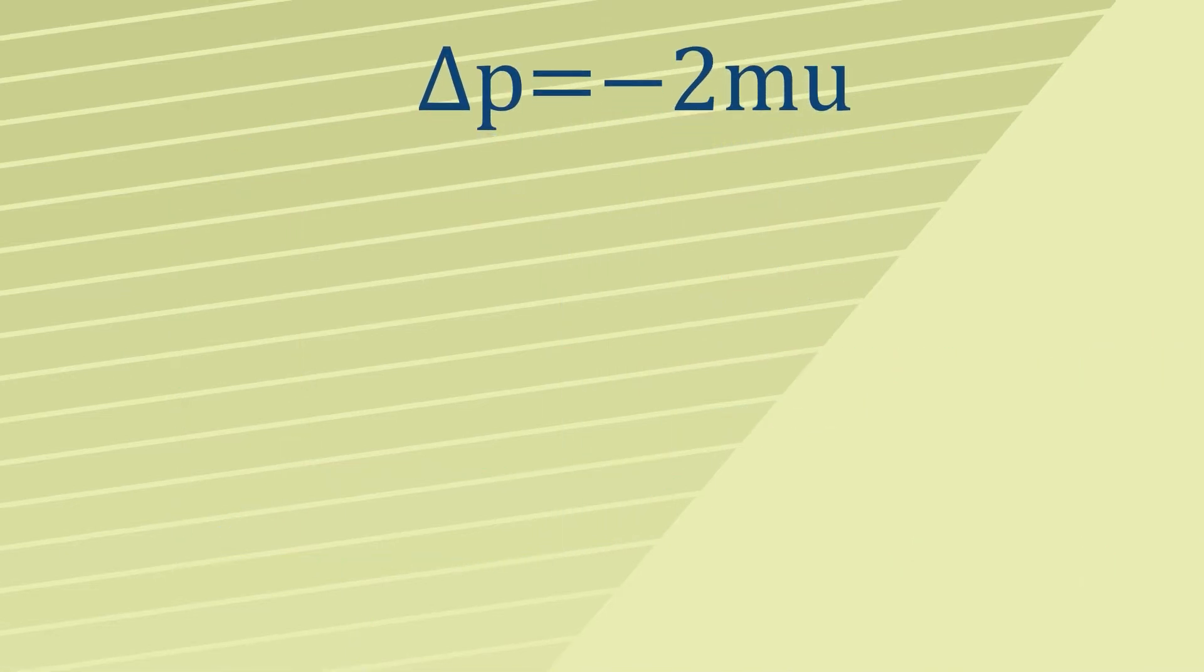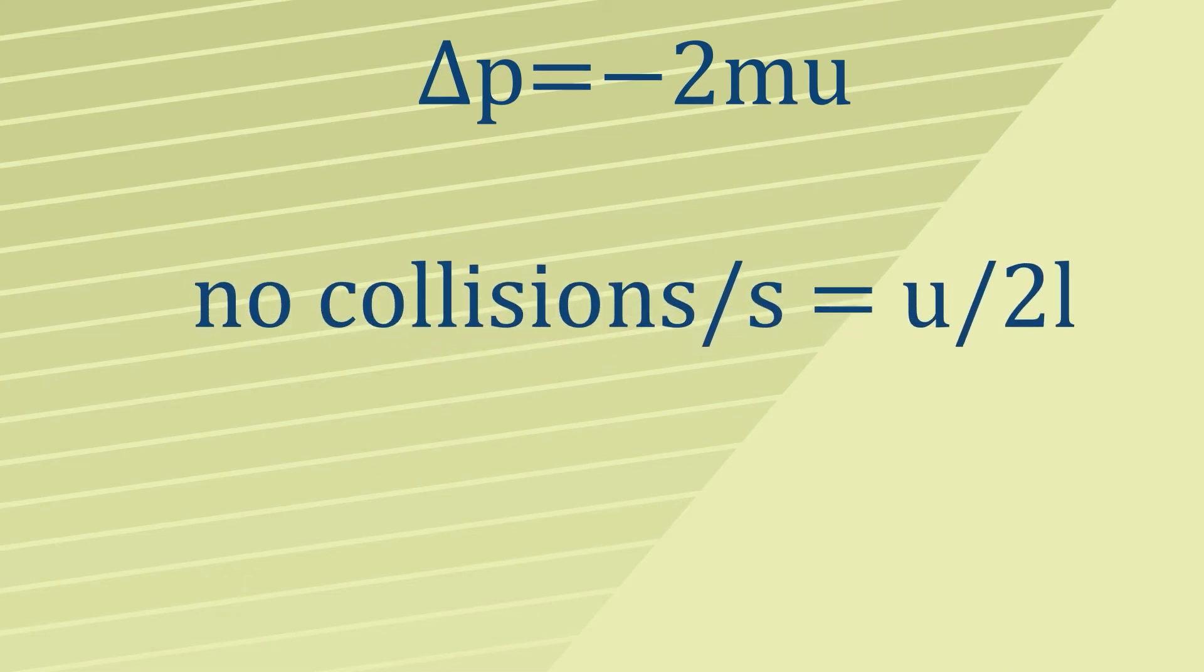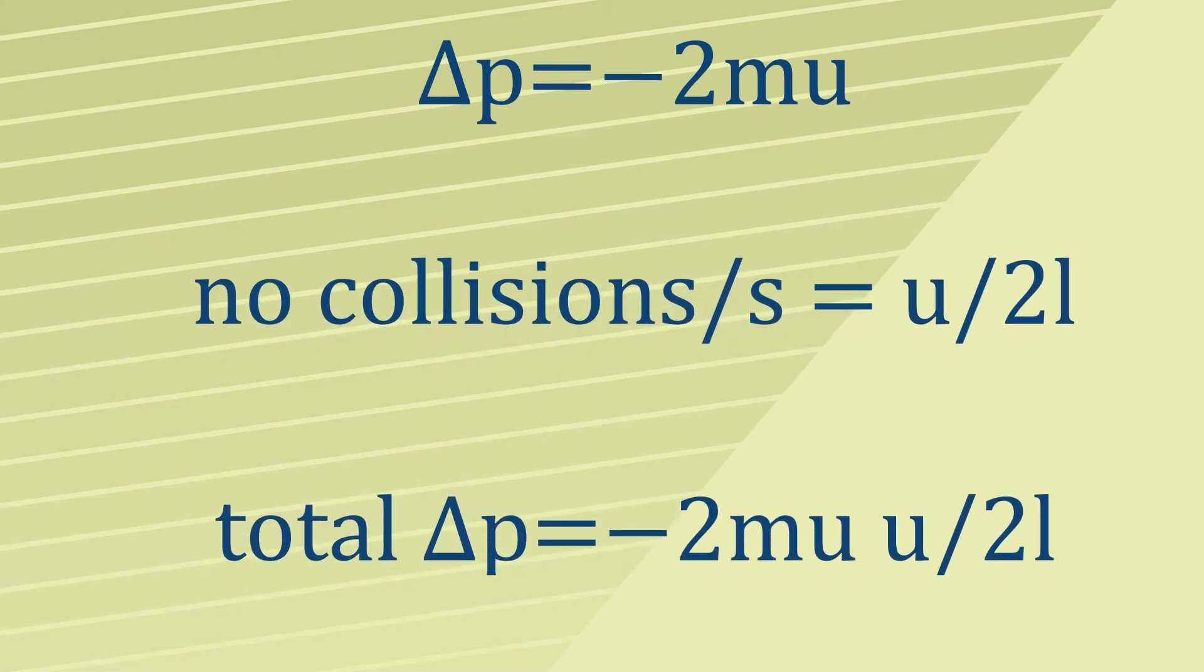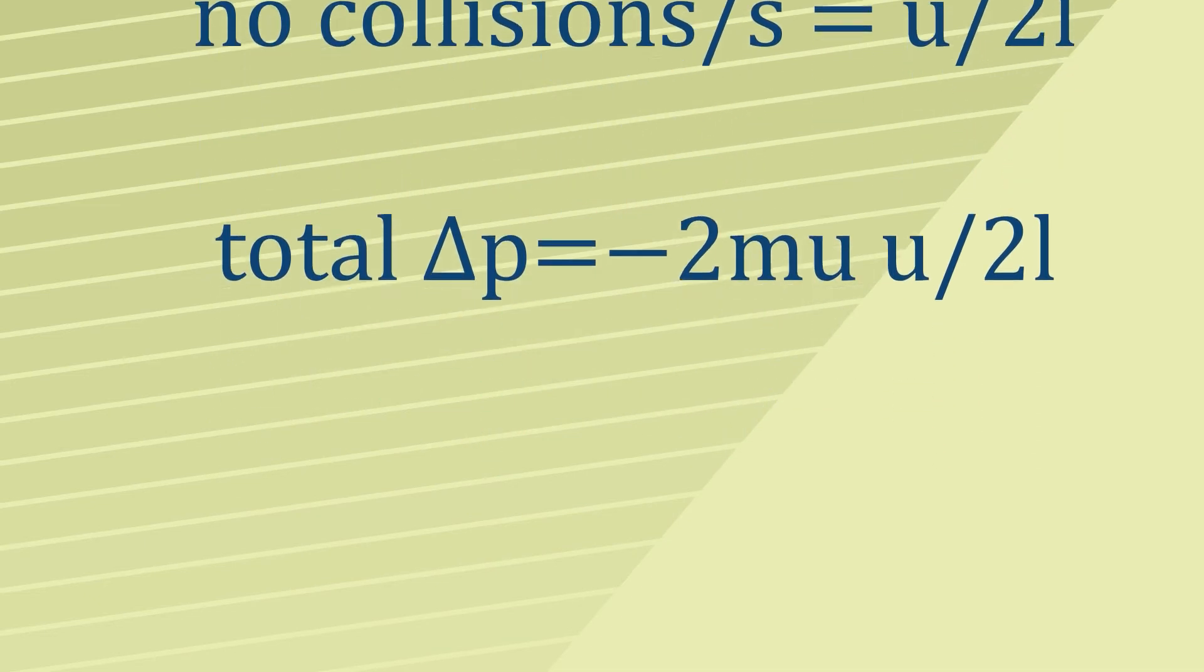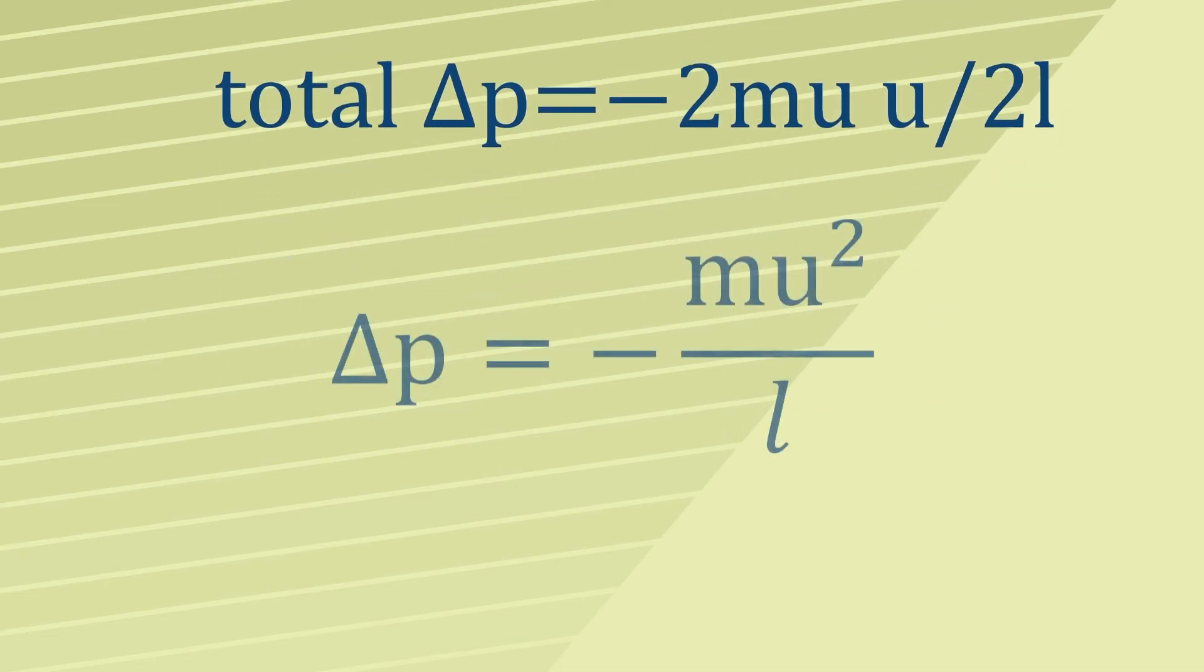Given that we have the momentum change in one collision and the number of collisions in one second, we can get the momentum change in one second, which works out as minus MU squared over L.